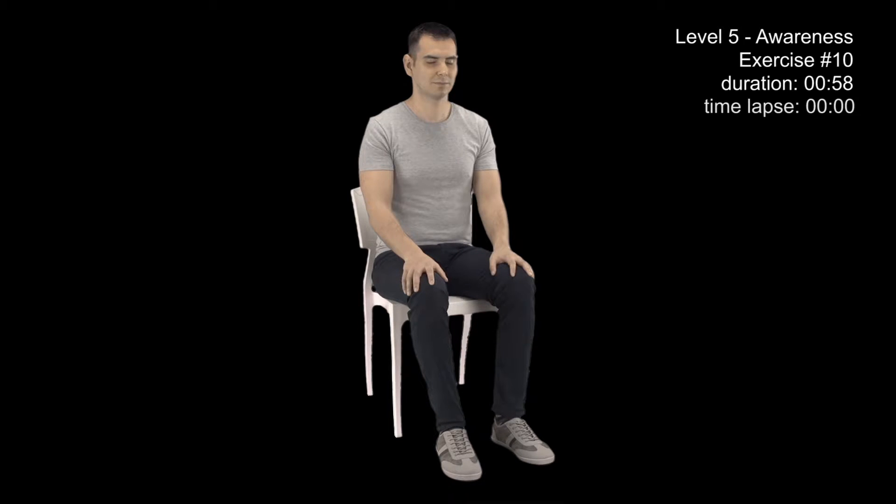For medium mental activity, count from 1 to 20 with 1 second of pause between each number. For high mental activity, count from 1 to 30 with 0.5 seconds of pause between each number.